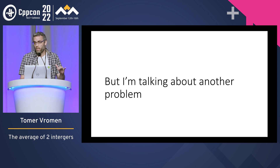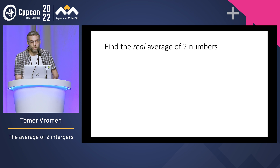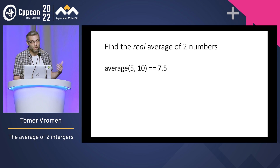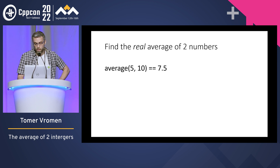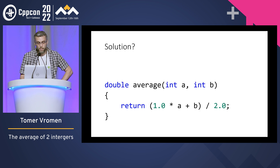I'm not talking about that — I'm talking about another problem: finding the real average of two numbers. That's when the average of five and ten is seven and a half. We need to use floating points.